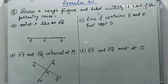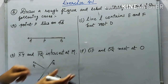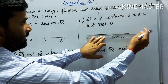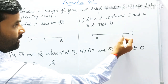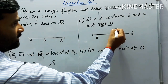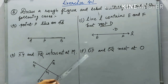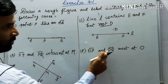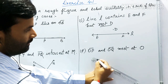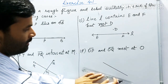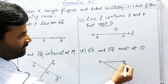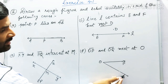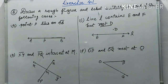Case C — line L contains points E and F, but point D does not lie on line L: draw line L passing through E and F, and mark point D away from the line. Case D — rays OP and OQ meet at point O: draw two rays starting from the common point O, one going toward P and one toward Q.